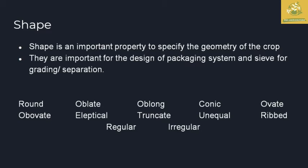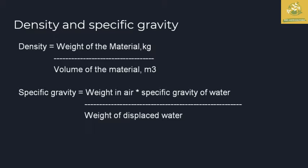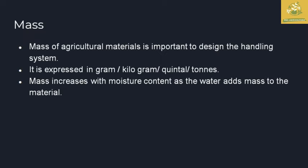Density and specific gravity: density is the weight of the material divided by the volume of the material, with measuring units of kilograms per cubic meter. Specific gravity is calculated as the weight in air multiplied by the specific gravity of water, divided by the weight of displaced water. Specific gravity is mainly calculated by the water displacement method.